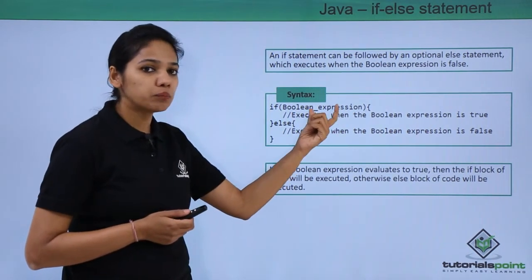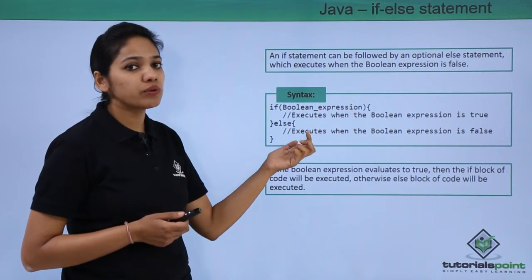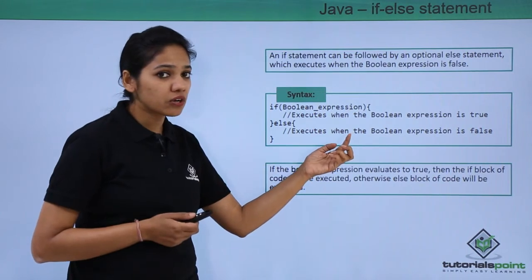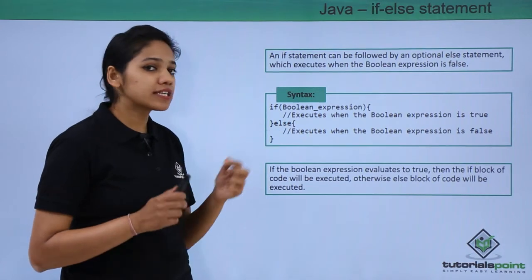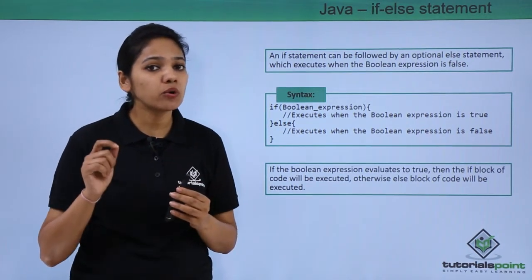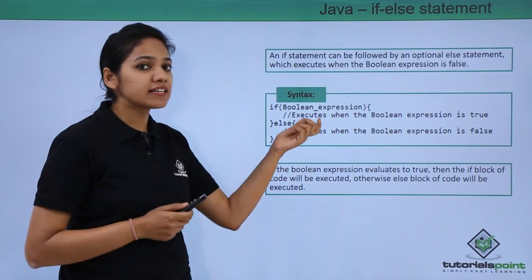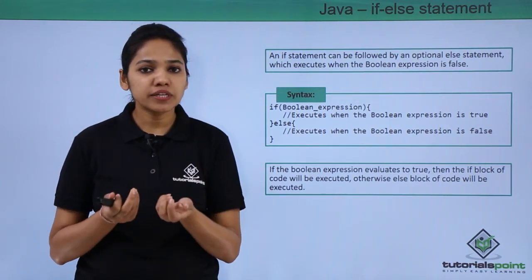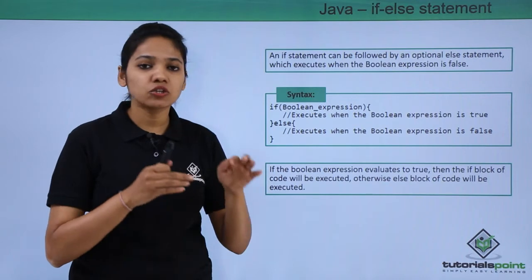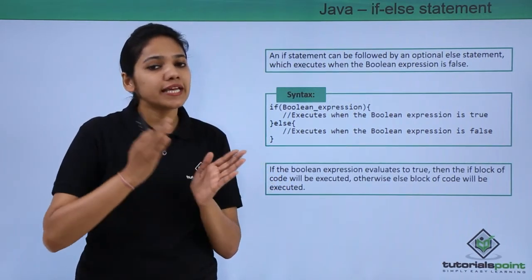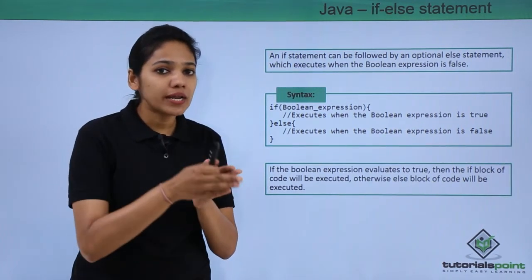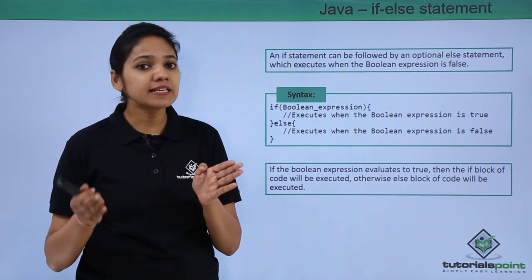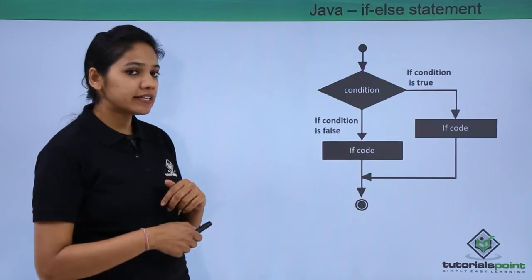We use an if keyword, provide a boolean expression, and then provide the braces. Inside those braces we provide the block of statements to be executed if the condition is true. If the condition is not true, outside the braces we provide an else keyword — and remember, this else keyword should not have a semicolon, because a semicolon means end of the statement. Else provides another block of statements to be executed. If there is only one path, the alternative path may or may not be available — it is the same case with if-else.